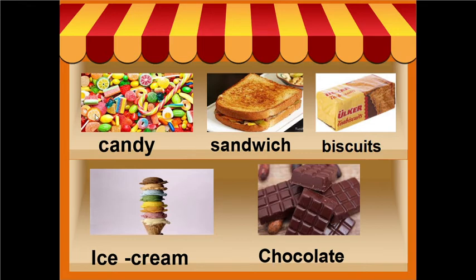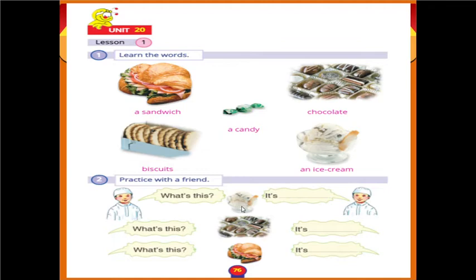Okay, so we have: candy, sandwich, biscuit, ice cream, and chocolate. Let's open our book at page 76.